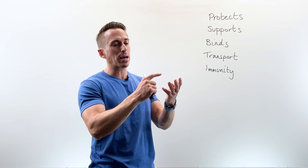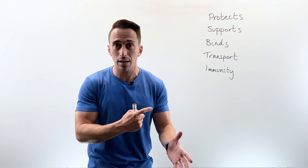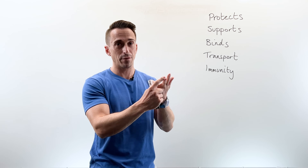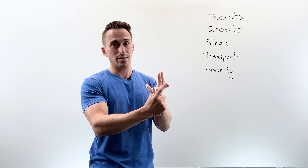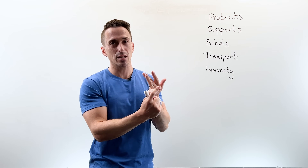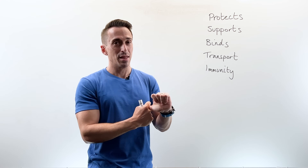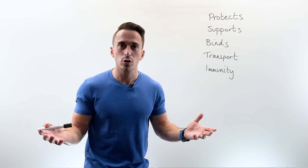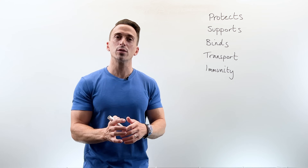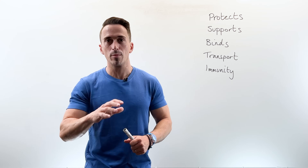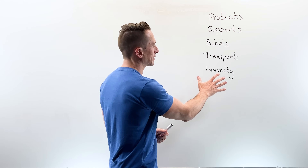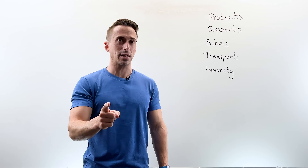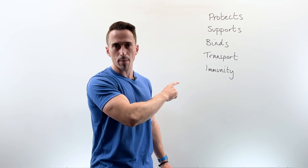Remember — never let monkeys eat bananas: neutrophils, lymphocytes, monocytes, eosinophils, and basophils. They're all cells of connective tissue floating through our bloodstream, providing us immunity. So these are the five functions of connective tissue that you must remember.